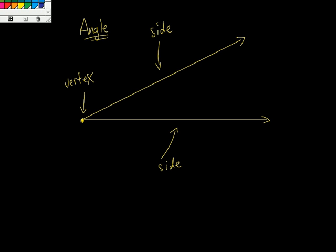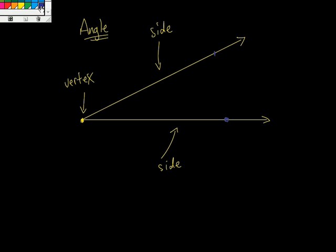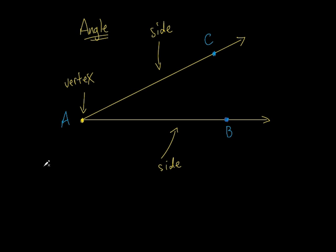A lot of vocabulary, but it's not hard. So let's label this thing. Let's put C, A, and B. If I asked you to name the two rays that make up this angle, what would you say? Ray AC and ray AB. Those are my two rays that make up that angle. Can I say ray CA? No, because the endpoint has to go first. So I have to say ray AC and ray AB. Can't go the other way.